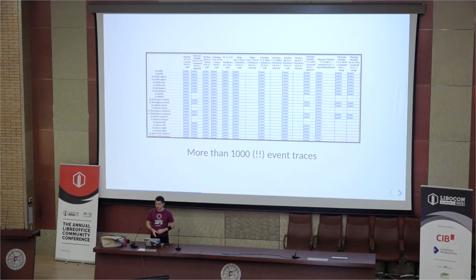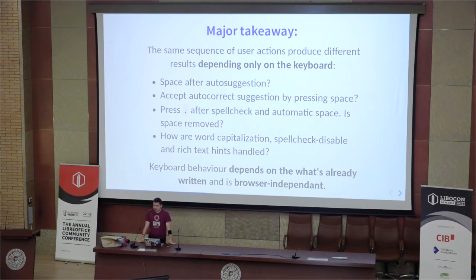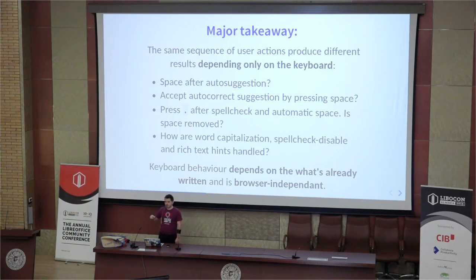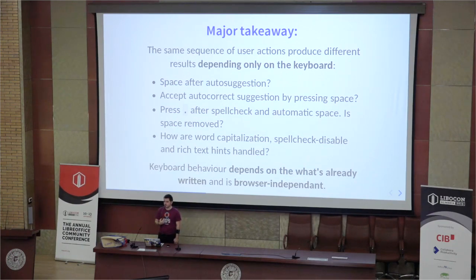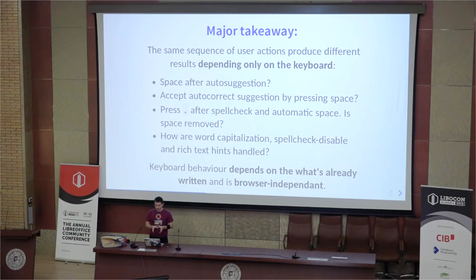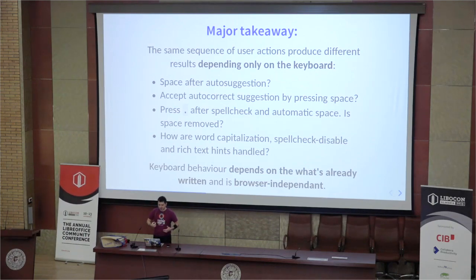Things to remember that are very important: the same sequence of user actions can provide different results depending on the keyboard. If you're swiping a word and then swiping another word, the decision of whether there's a space between those words is the keyboard's, not the web browser's. This is not intuitive when you first approach the problem, but after a few hundred traces it becomes obvious. Same thing with: do I press space twice to get a period? If I spell check then press a period, does the space collapse before? These interactions depend only on the keyboard, not on the browser.